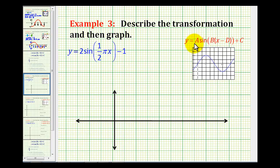Looking at our notes for the transformations of the sine function, we need to recognize that A is equal to two, which will affect the amplitude. B is equal to one-half pi, or pi over two, which will affect the period.